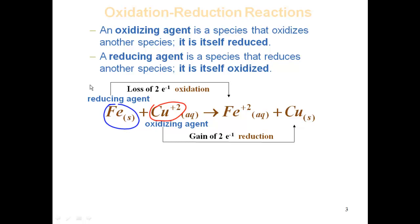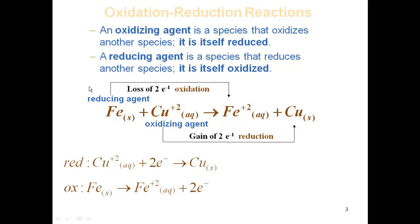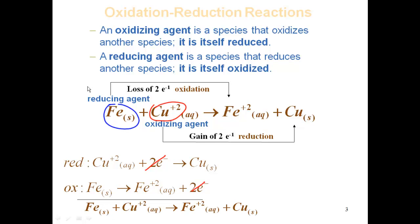We can balance this by the redox method. For the reduction: copper 2+ plus two electrons gives copper solid — one copper on both sides, zero charge balanced. For the oxidation: iron gives iron 2+ plus two electrons — zero charge on the reactant side, balanced. The electrons cancel since both half reactions have two electrons, so we bring everything down to get our balanced equation.